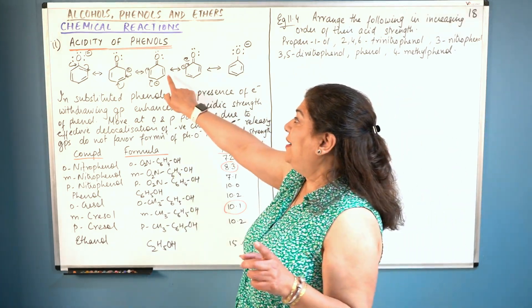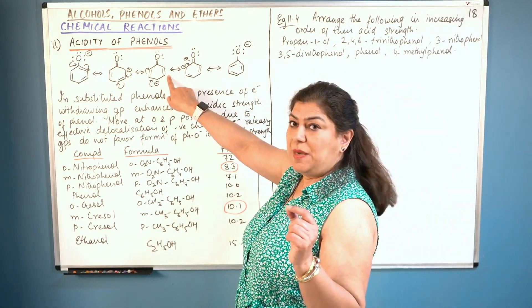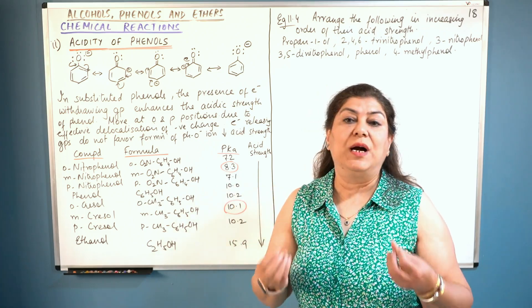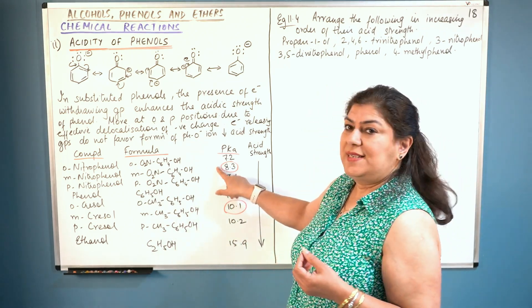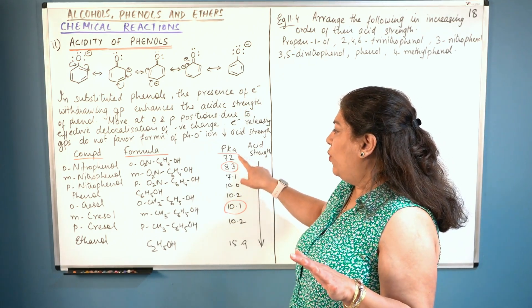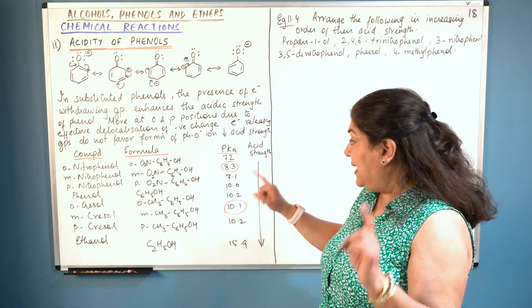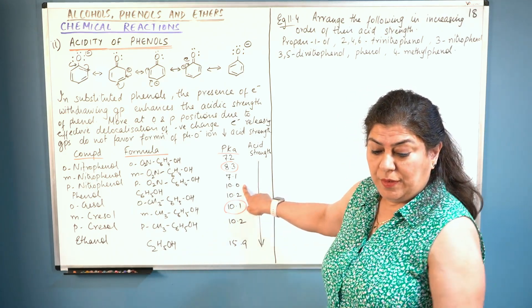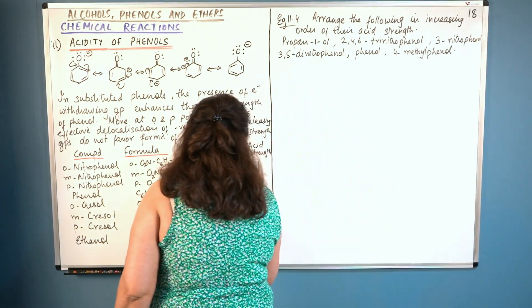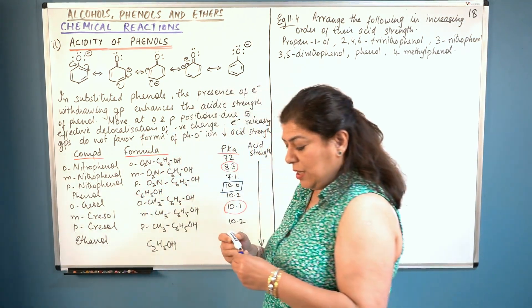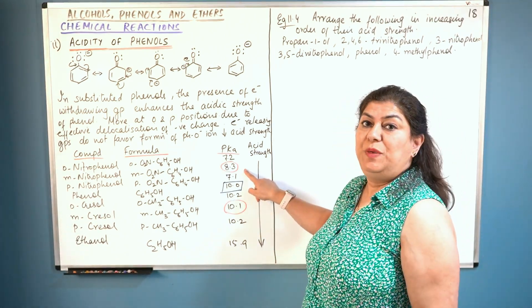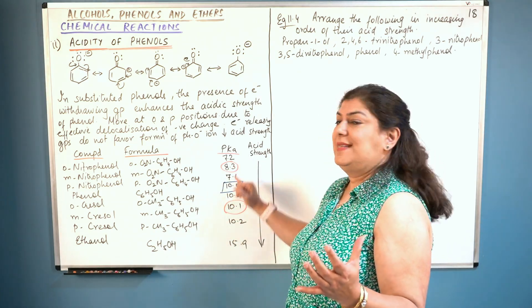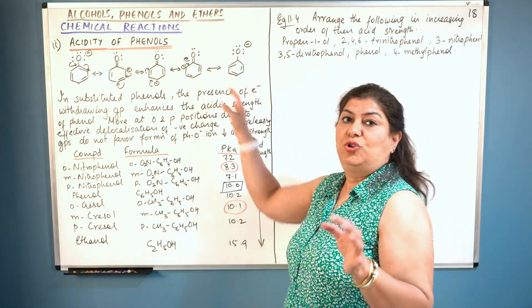Meta-nitrophenol has pKa 8.3 because the substituent at the meta position affects the whole ring but not the exact spots where the electrons have to come. So meta is less acidic than ortho and para. Yet 8.3 is still less than 10.0 (phenol), which means meta-nitrophenol is more acidic than phenol — just not as acidic as when the nitro group is at ortho or para.